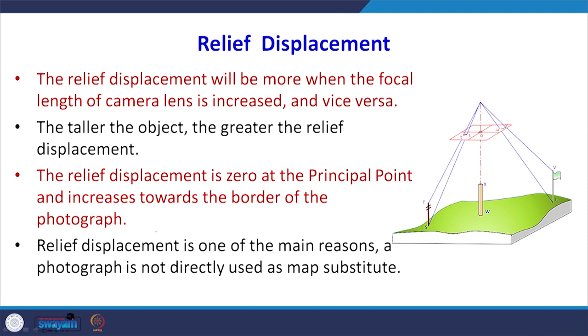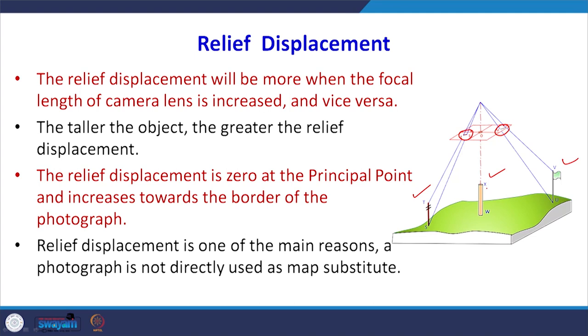We have shown in the image three objects with different heights. Object T, which is a telephone line, and object V, which is a flag, give us the bottom as well as the top of the object. We can see that the taller object gives greater displacement. If we go to the center point, the relief displacement is zero. At principal point O, you do not see the bottom separate from the top — relief displacement here is zero.